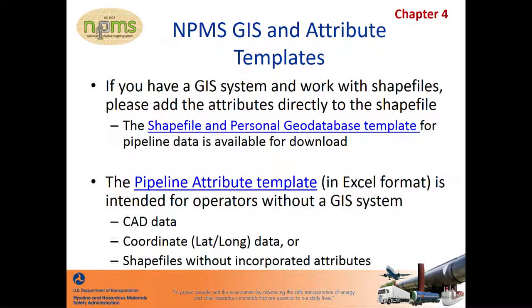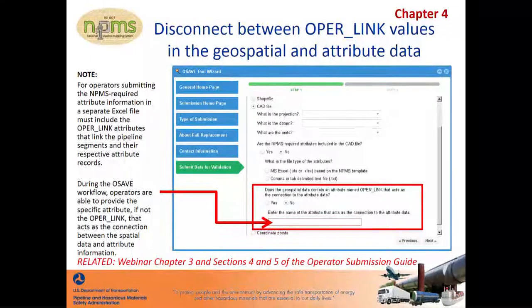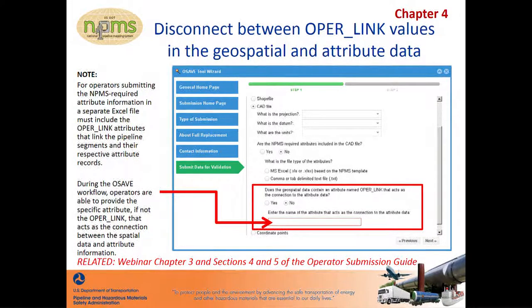These templates are available for download from the Pipeline Operator page on the NPMS website under the Summary of Required Components for Pipeline Submission section. The NPMS is aware that some operators may not be able to create the opera link field within their geospatial data file to act as a connection to the attribute data and correspond to the opera link attributes included in the separate Excel file containing the NPMS required attributes. For operators limited to the field names created by their software package, such as the layer field in CAD files, NPMS staff has added a section within the OSAVE workflow that allows operators to relay this information to NPMS staff. Answering this question correctly prevents the submission from being held back from processing due to any confusion.